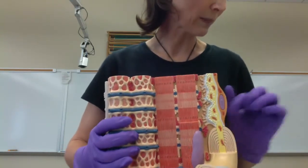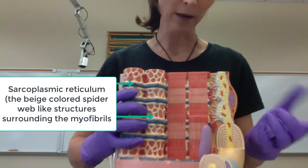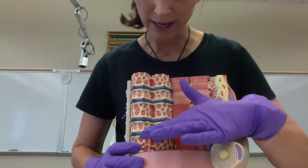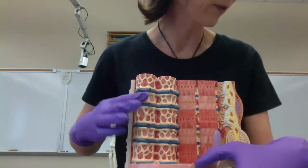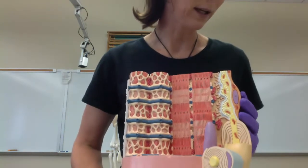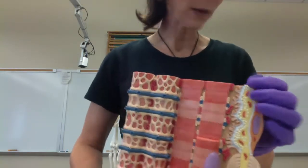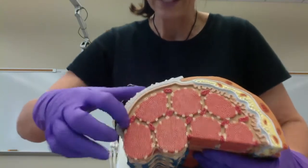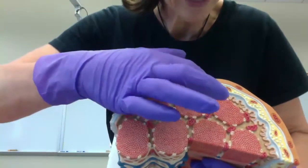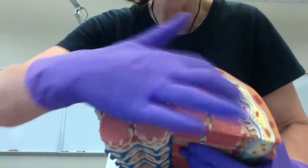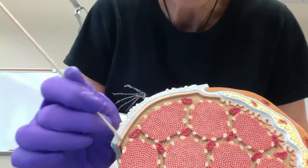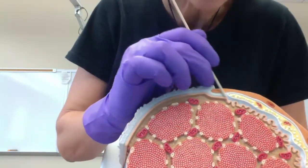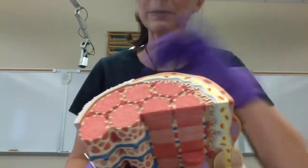There are a couple other things they want you to know. First is the sarcoplasmic reticulum, which is basically the endoplasmic reticulum for a muscle cell — all of this here is the sarcoplasmic reticulum. Then there's the sarcolemma, which is this outer layer that covers the muscle fiber or muscle cell. It's that thin line just beneath the outer surface — basically the plasma membrane of the muscle cell.